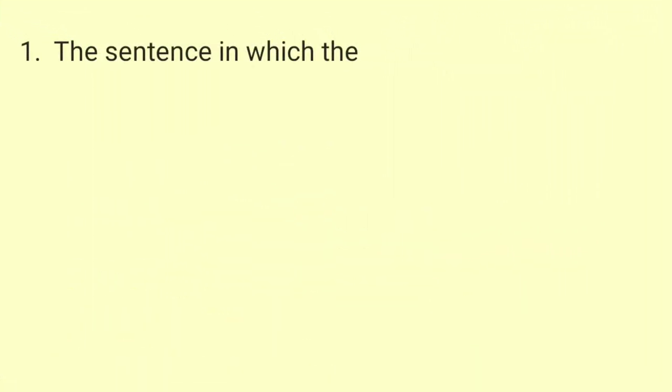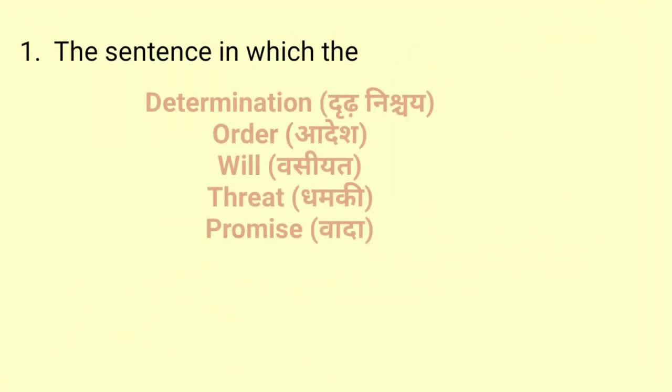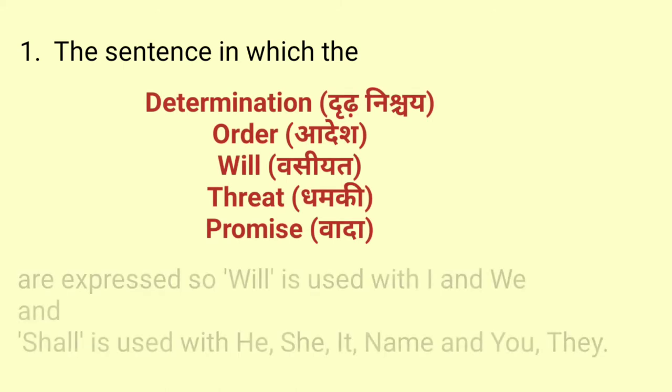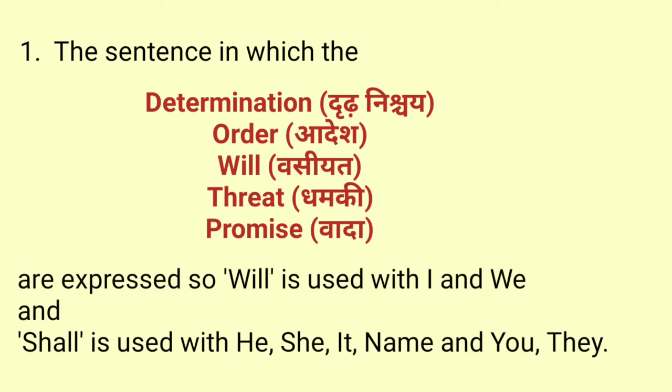First point of future continuous tense: In sentences where determination, order, will, threat, or promise are expressed, 'will' is used with 'I' and 'we', and 'shall' is used with 'he', 'she', 'it', name, 'you', and 'they'.